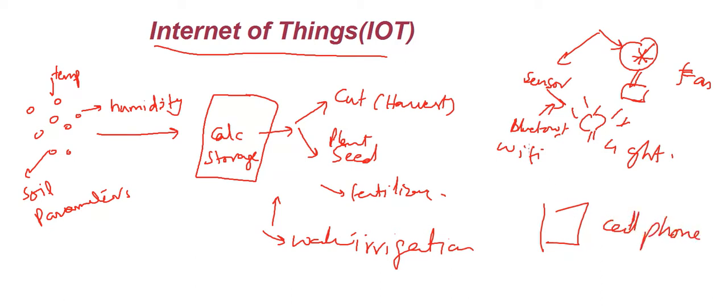Using these same devices — Bluetooth or WiFi — our cell phone connects and controls these lights and fans. This is a kind of connection of devices where we are controlling some devices through our cell phone, and the other devices are responding to the messages sent by our cell phone.